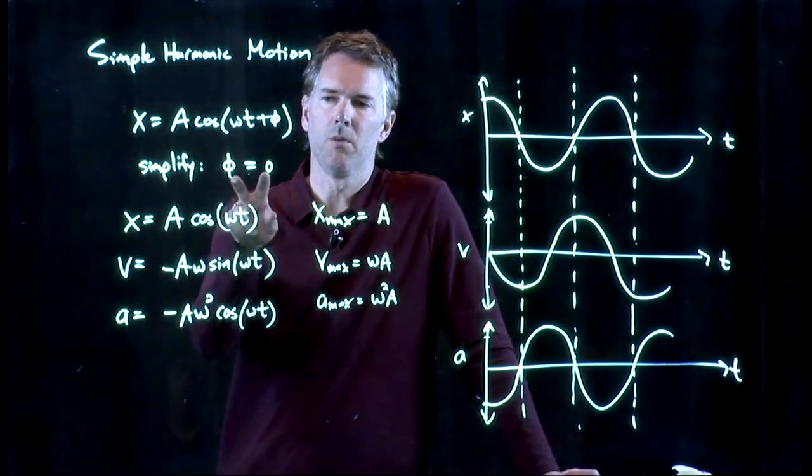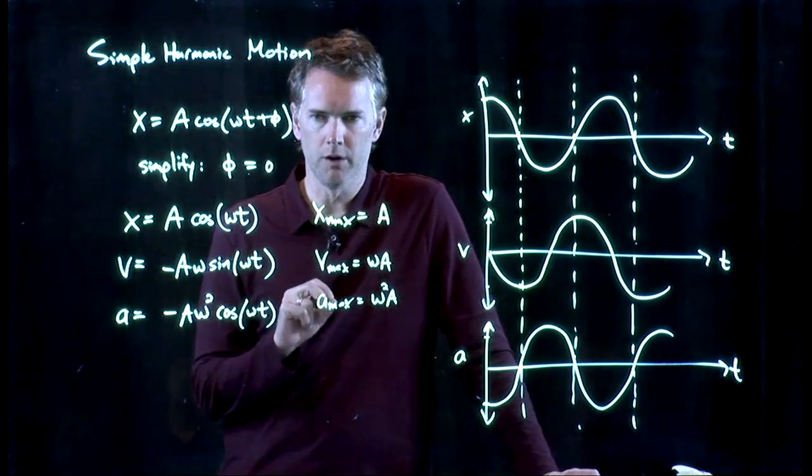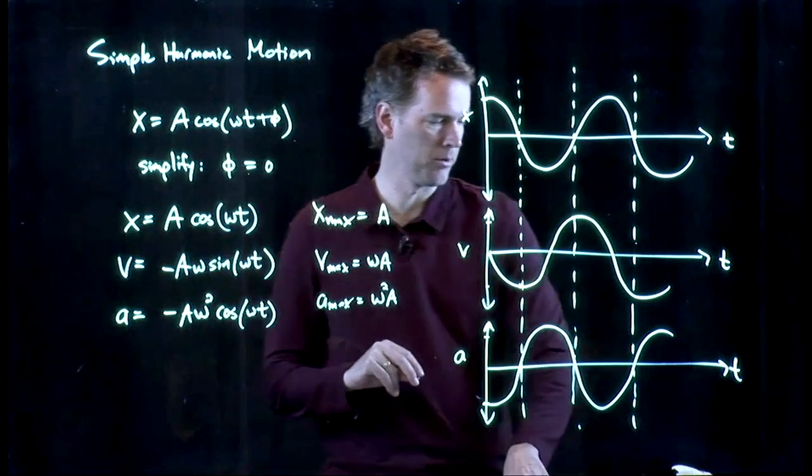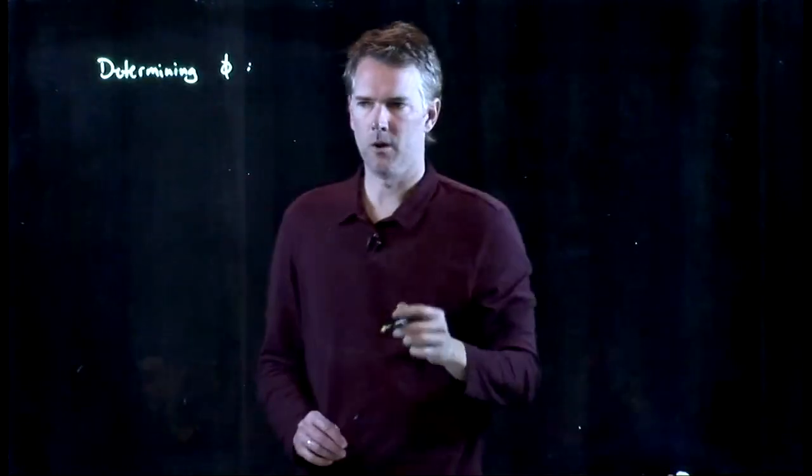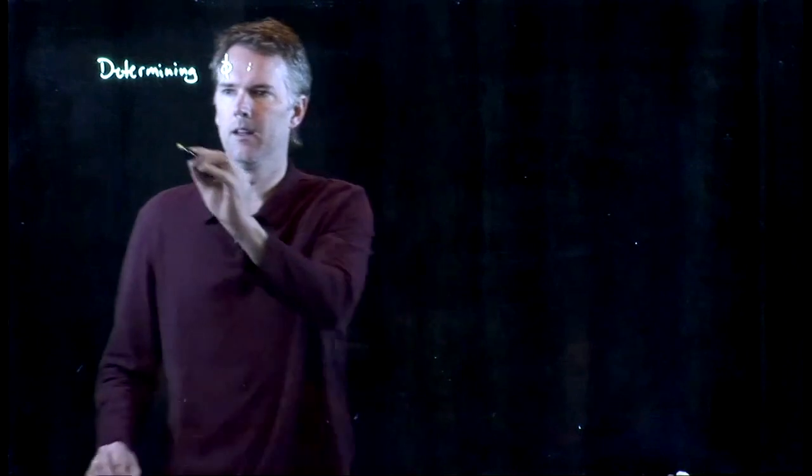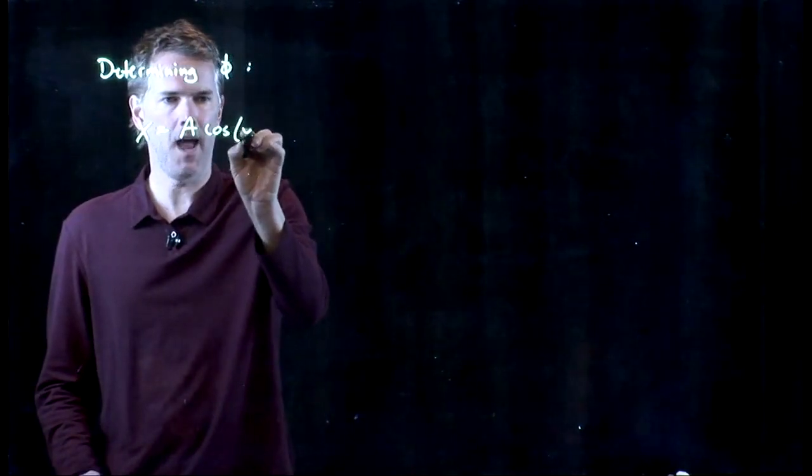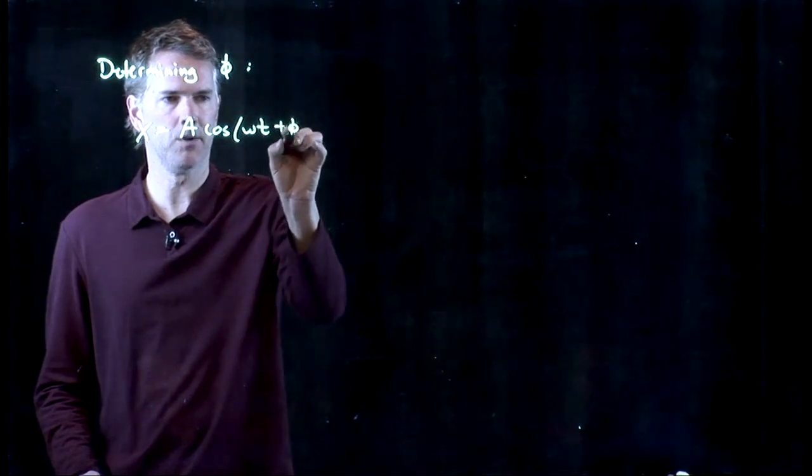Let's look at the case where phi is no longer zero and see if we can determine phi from the starting parameters. Hello class, let's go back to simple harmonic motion for just one second. Let's go back to our general solution. X equals a cosine omega t plus phi.